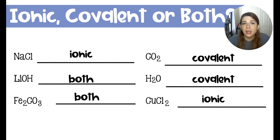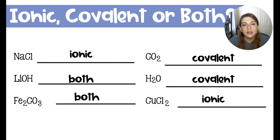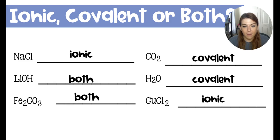The same is true for iron(I) carbonate — the atoms in the carbonate are covalently bonded to each other, and then the carbonate bonds to the iron ionically. Then we have CO2, carbon dioxide, which has covalent bonds — easy to spot because there's no metal. Same for H2O — there's no metal, so water is a covalently bonded compound. And last, copper(II) chloride: copper is the metal, chlorine is the nonmetal, so that is going to have ionic bonds.